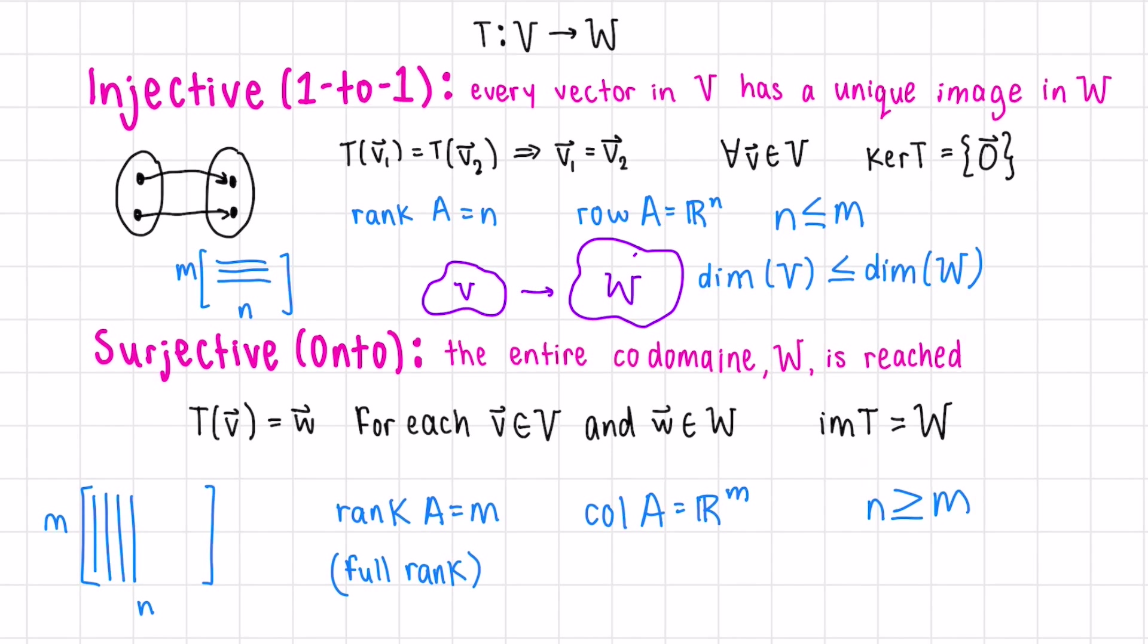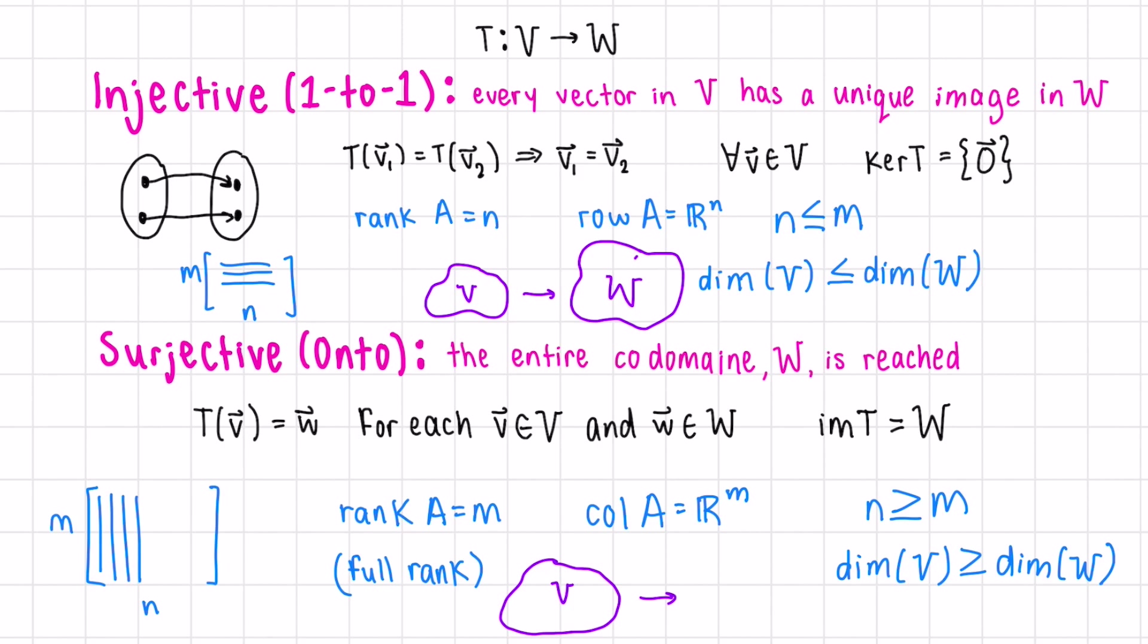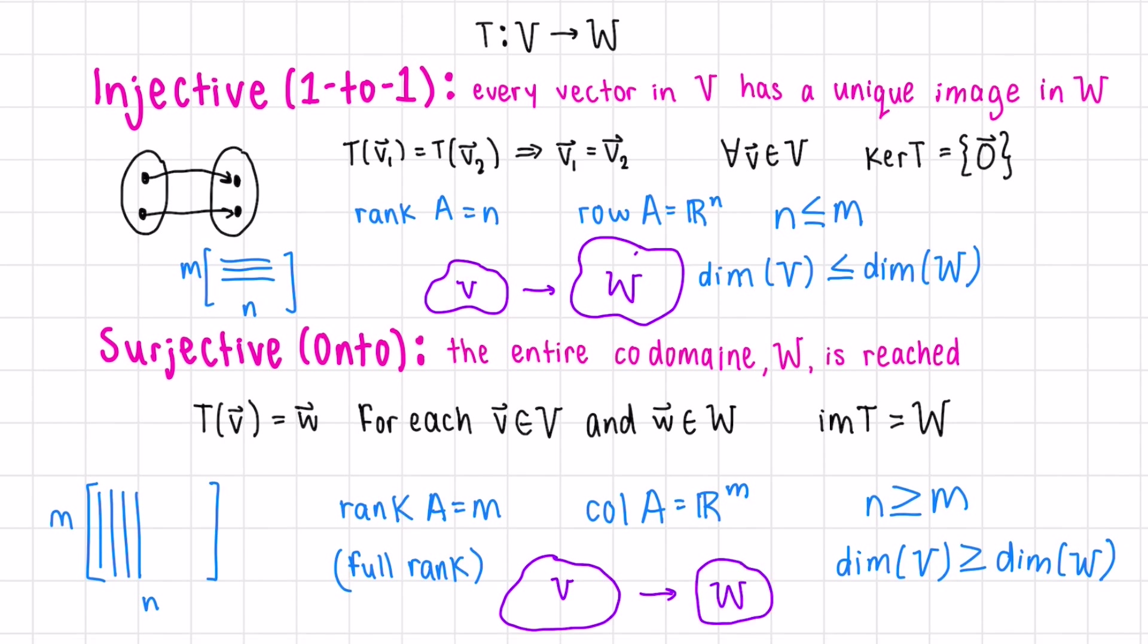In other words, the dimension of our domain V is equal to or greater than the dimension of our codomain. If we start with a big V and then go to a smaller W, the whole space would be reached, so we would have surjectivity.